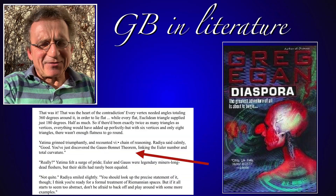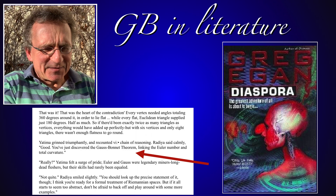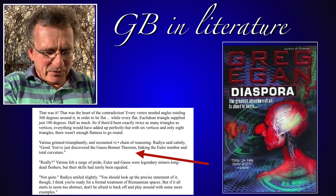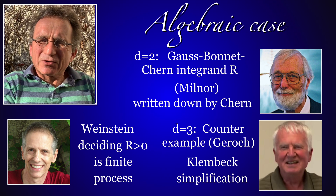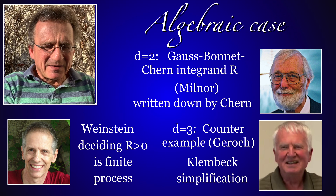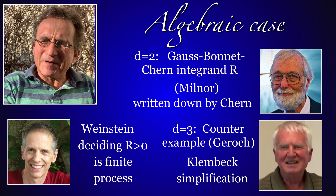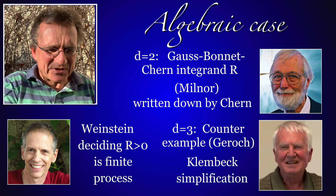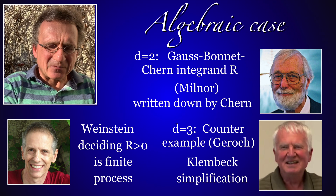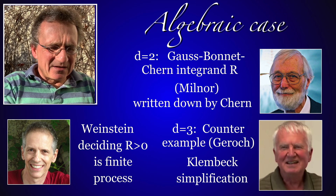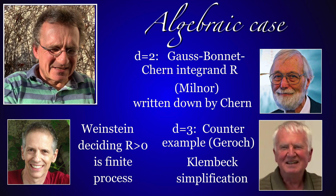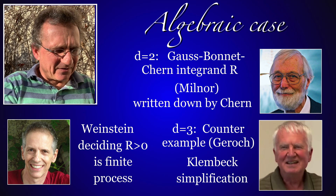The Gauss-Bonnet theorem is quite important — it even appears in science fiction, in the book Diaspora by Greg Egan. Gauss-Bonnet looked promising at first for the Hopf conjecture. Weinstein showed that deciding whether curvature is positive can be done in finitely many steps; the four-dimensional case worked, as seen by Milnor. But already in dimension six the Gauss-Bonnet-Chern integrand can become negative, and Robert Geroch found a counterexample.